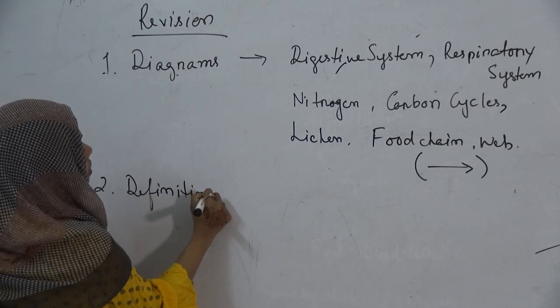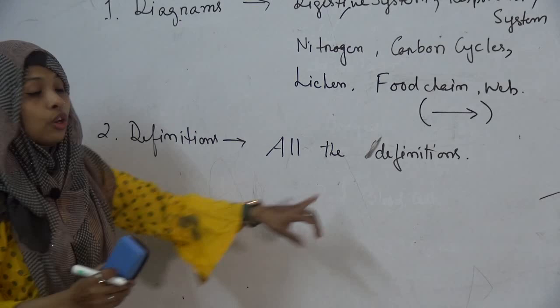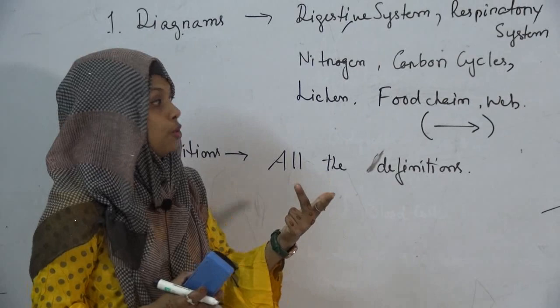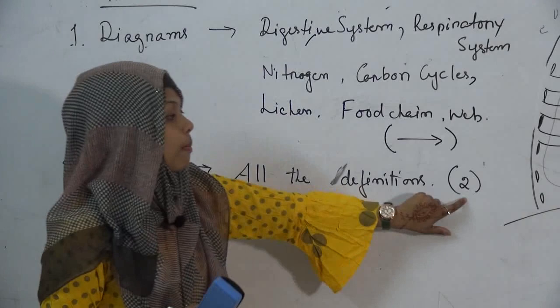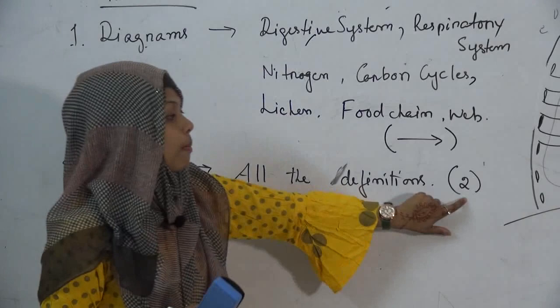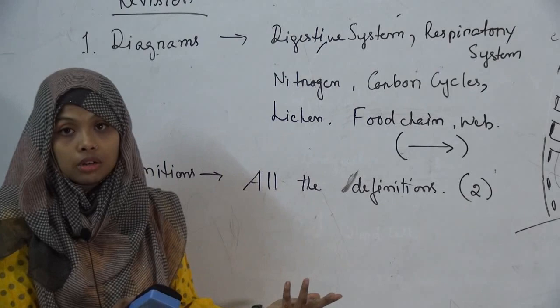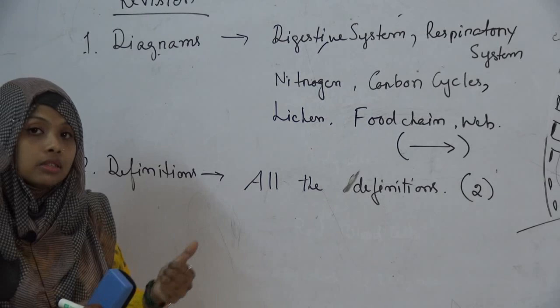Moving on to definitions — I want you to go through each and every definition. These include: habitat, ecosystem, environment, denitrifying bacteria, nitrifying bacteria, digestion, and why we need to digest. All these definitions are worth two marks each, meaning I need to see at least two valid points in your definition. For example, if you write 'digestion is a process by which food is being digested,' you are basically giving the question back, which will earn you a zero. Read the questions properly and then start answering.